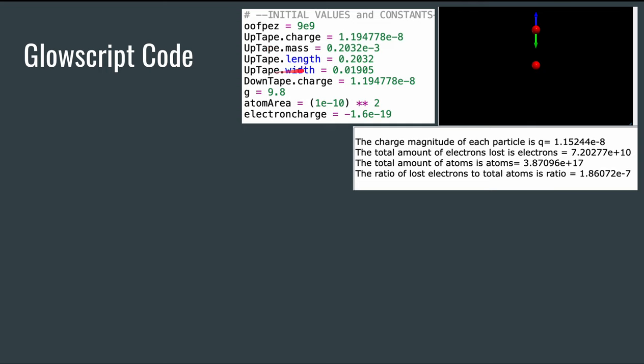So then we have the tape mass, tape length, tape width. We have the gravitational constant, atom area, and electron charge. And then you'll see here the total charge magnitude of each particle is 1.15 times 10 to the negative eighth, which is pretty similar to what we got here, probably just some rounding differences.